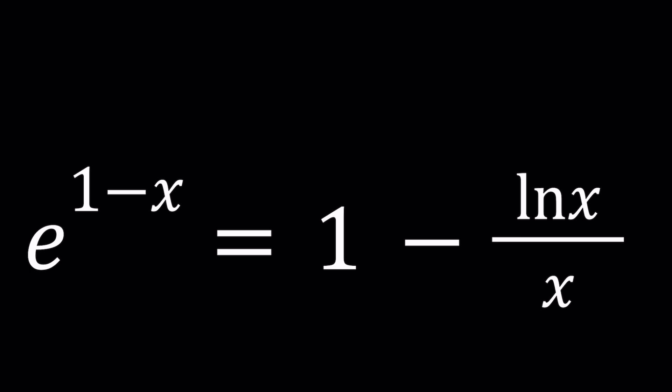I'm also going to share something with you. I'm a little disappointed at myself but things happen. So e to the power 1 minus x is equal to 1 minus ln x over x.